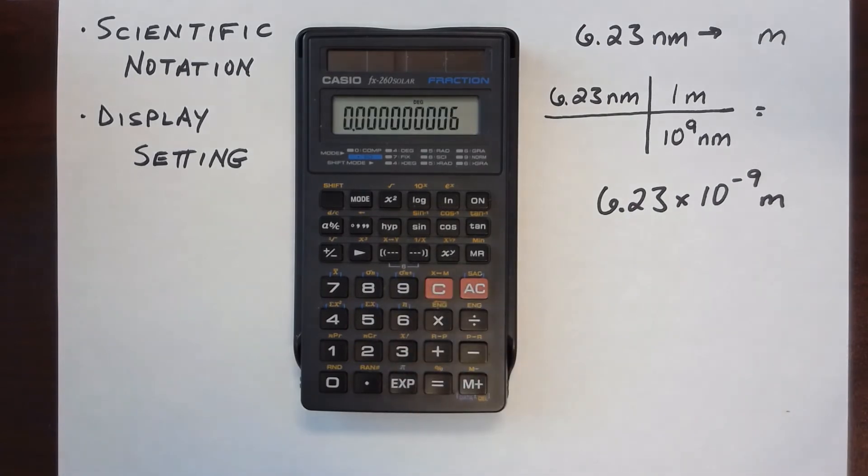And then this is going to give me 6 times 10 to the minus 9. But notice that the calculator is not displaying the 2 or the 3.